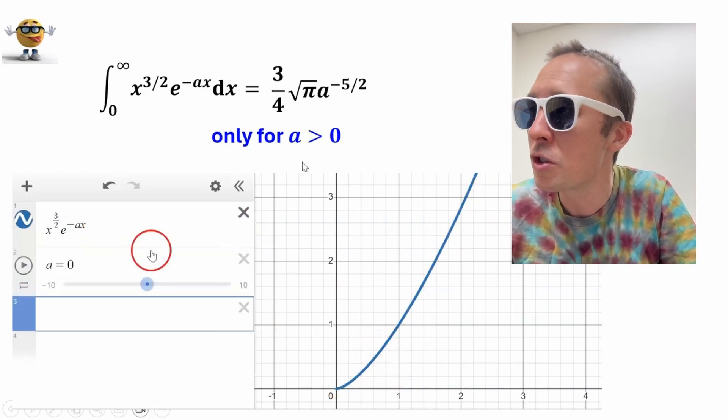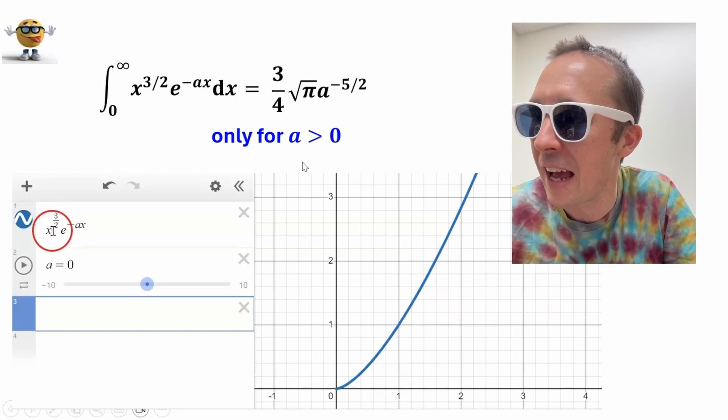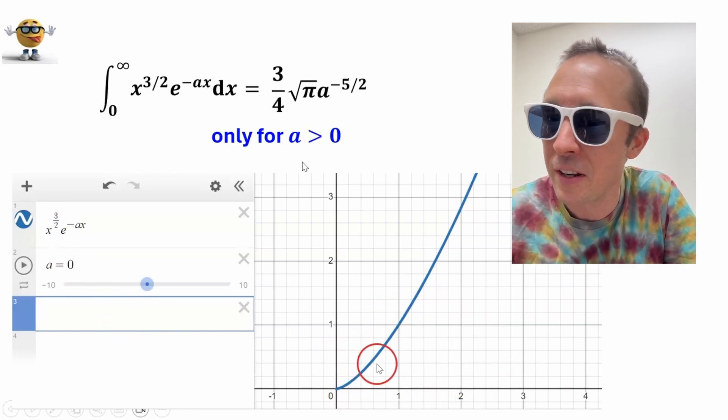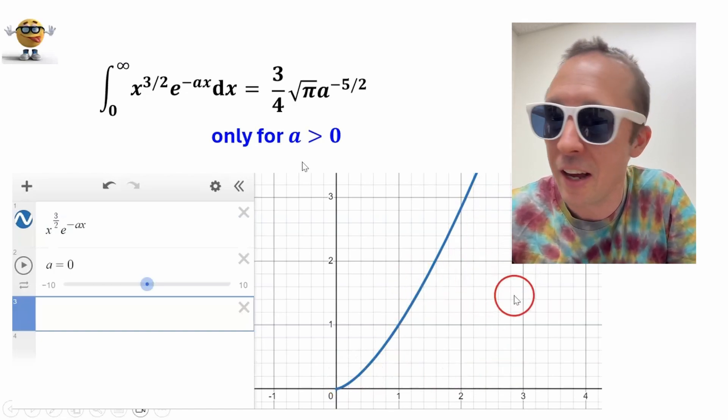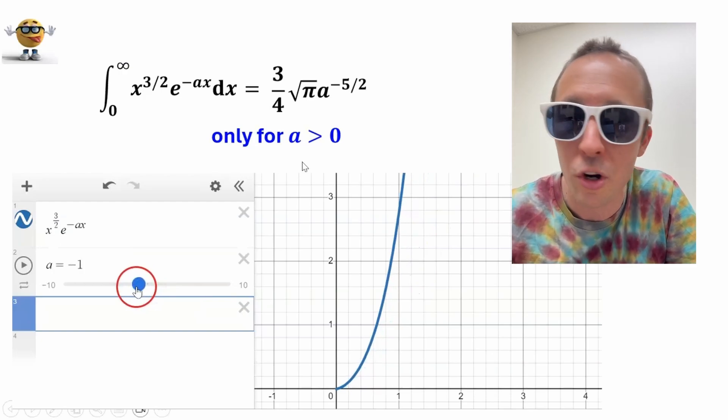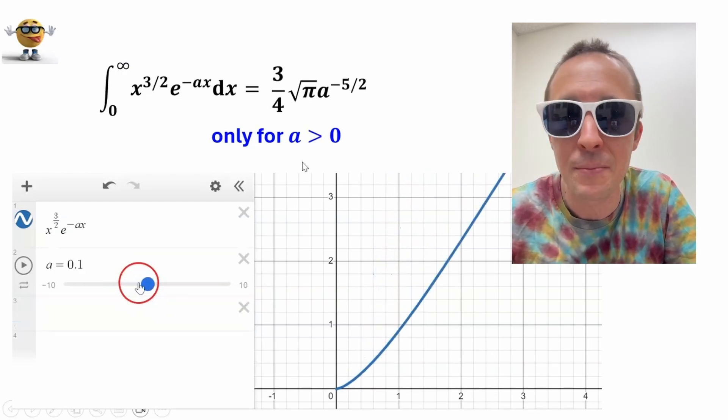then the curve goes off, so if a is 0, this is all 1, so we have the integral of x to the 3 halves, and the improper integral is divergent, because as x goes to infinity, the curve goes to infinity, so there's no defined area under the curve, and if a is negative, it just gets worse, it's still divergent, so we need a to be greater than 0.